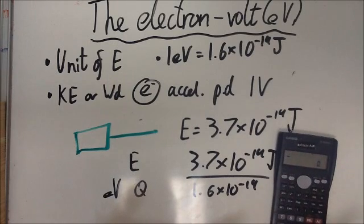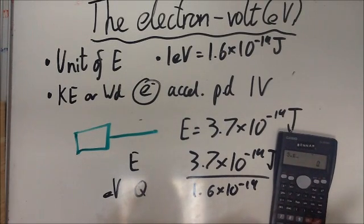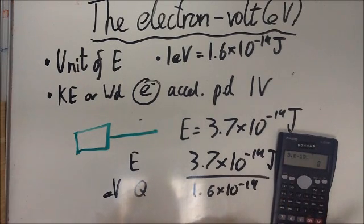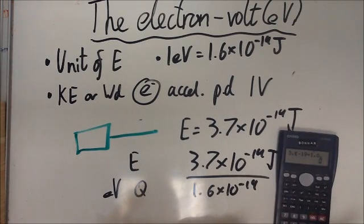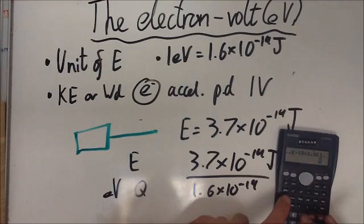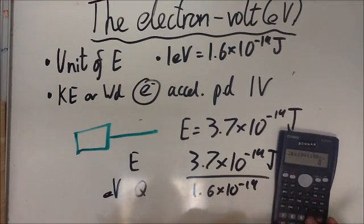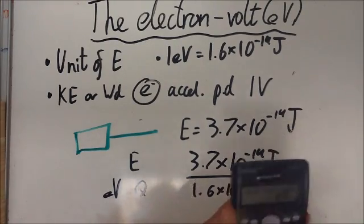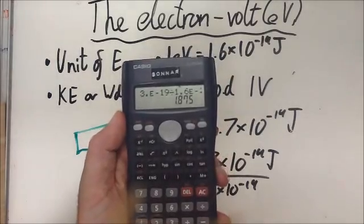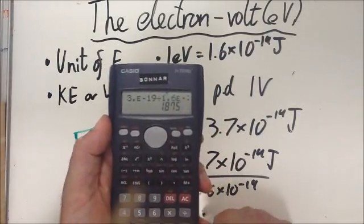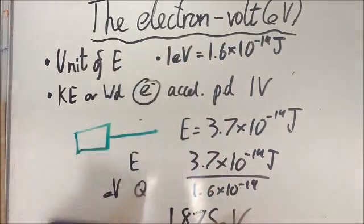Okay. So here we go. 3.7 times 10 to the minus 19 divided by 1.6 times 10 to the minus 19. And that gives us a value of 1.875 electron volts.